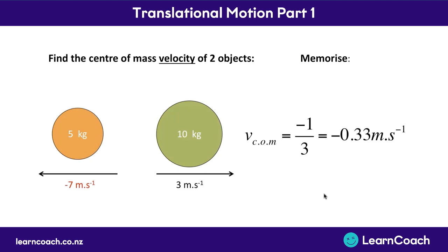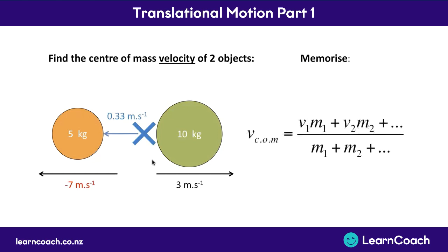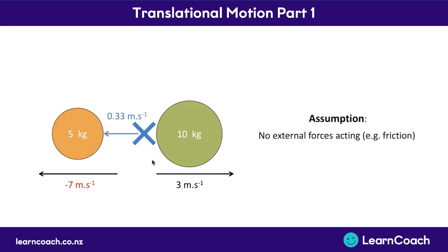There is one assumption that goes with the velocity calculation. If you have a center of mass moving along, you have to assume there are no external forces acting — there isn't any friction, and it's not going to bump into a wall and stop, because those things would obviously change the center of mass.